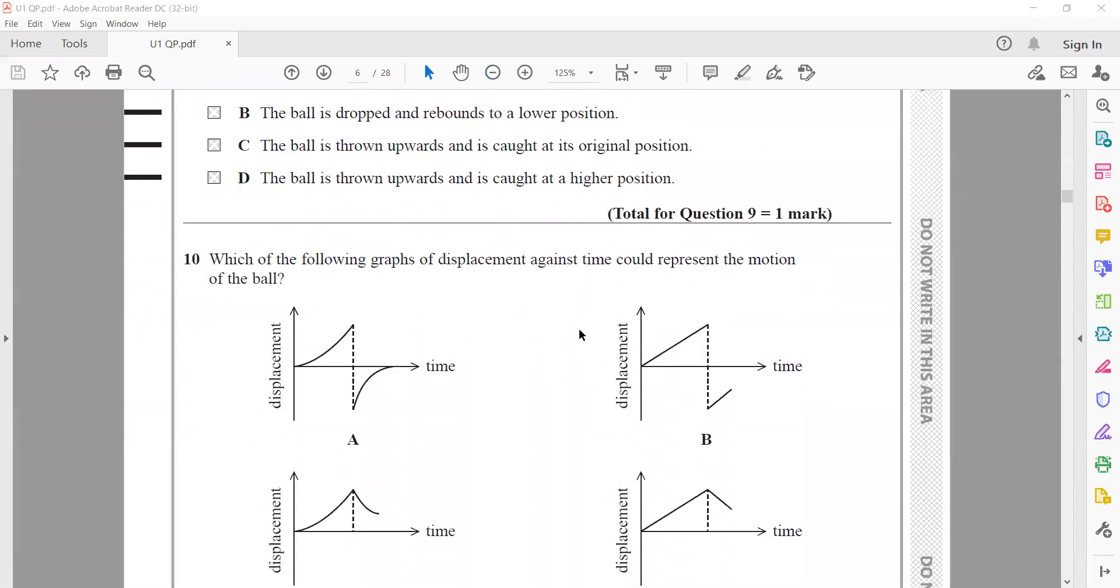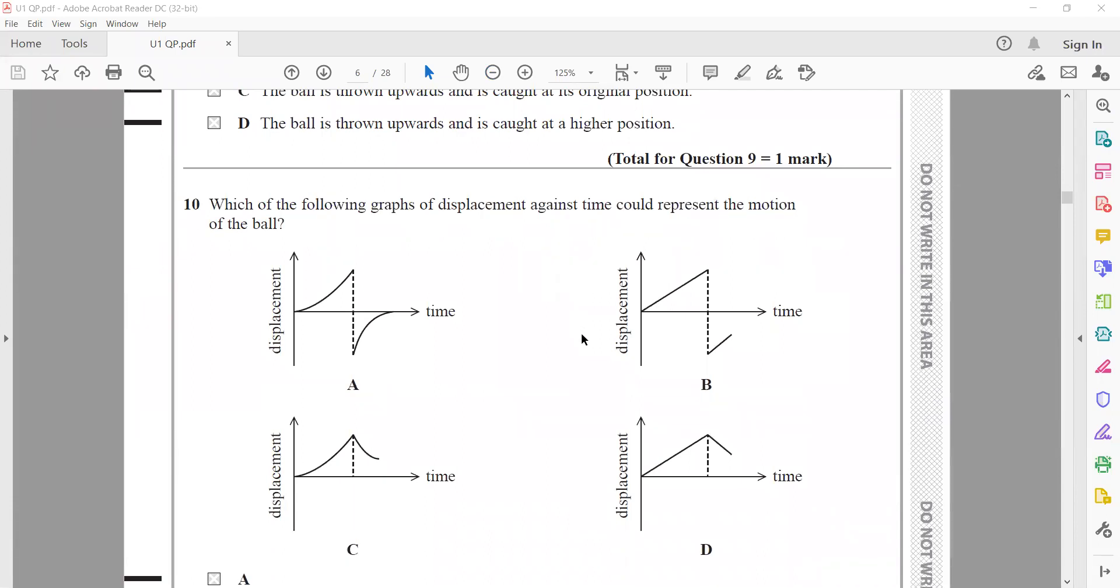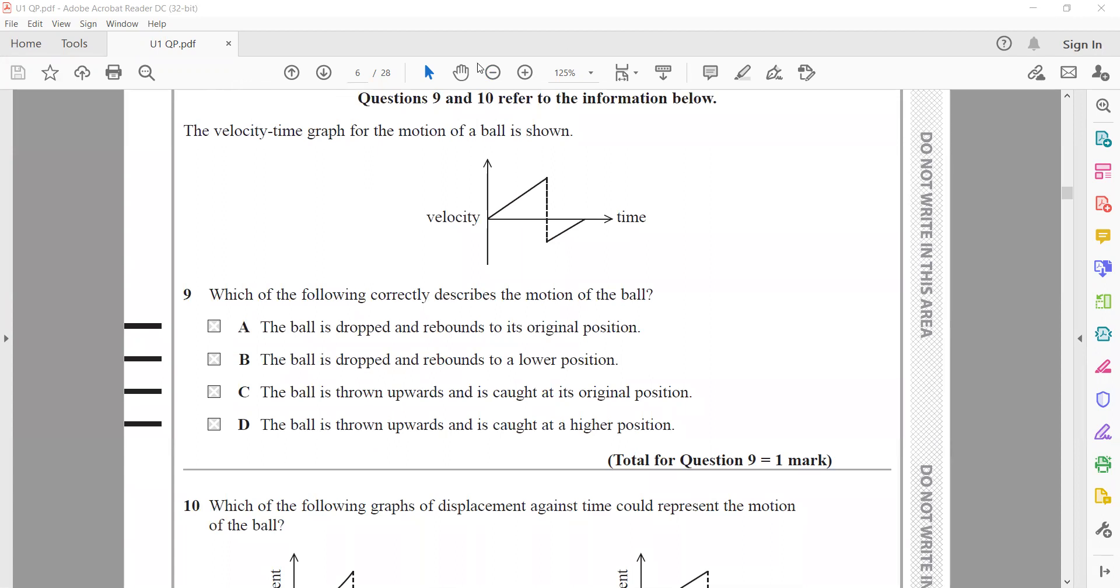Which graph of displacement against time could represent the motion of the ball? From velocity-time we need displacement-time. For displacement-time graph, the slope represents velocity. Velocity is increasing, so the slope should increase. When you take Y1 and Y2, Y2 is above Y1, so the slope should be positive. The slope increases and has positive value, so the graph will be like this.